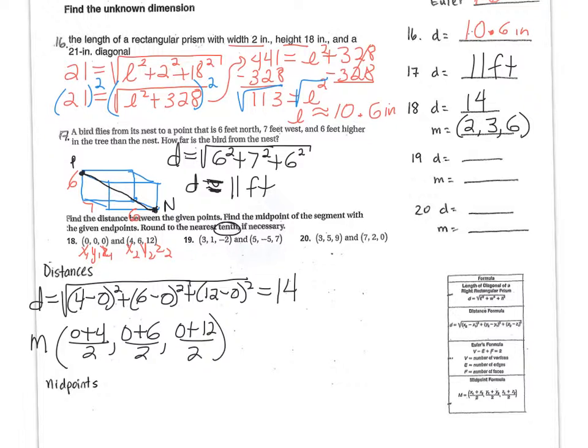Okay, so then the answers for number 19 are supposed to be 11. Did you get 11? Yes. And the midpoint is 4, negative 2, and 2.5. Okay, great.